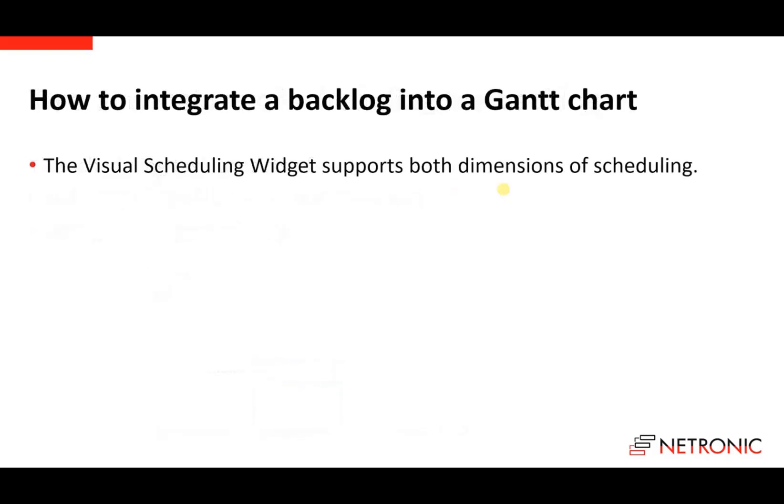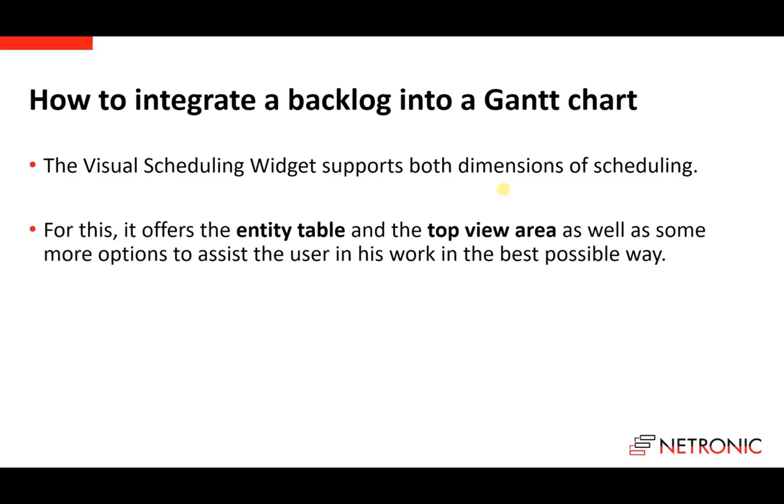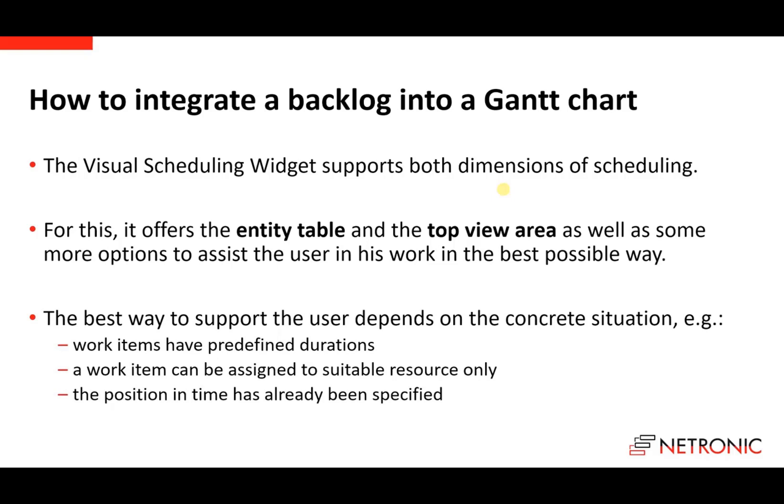How can we integrate a backlog and the interaction with a backlog into a Gantt chart? The good news is that our visual scheduling widget supports both dimensions of scheduling. For this, the widget offers first the entity table, secondly the top view area, and some more options to assist the user in the best possible way. The best way to support the user depends on the current situation — for example, whether work items have predefined durations, can only be assigned to suitable resources, or the position and time has already been specified.